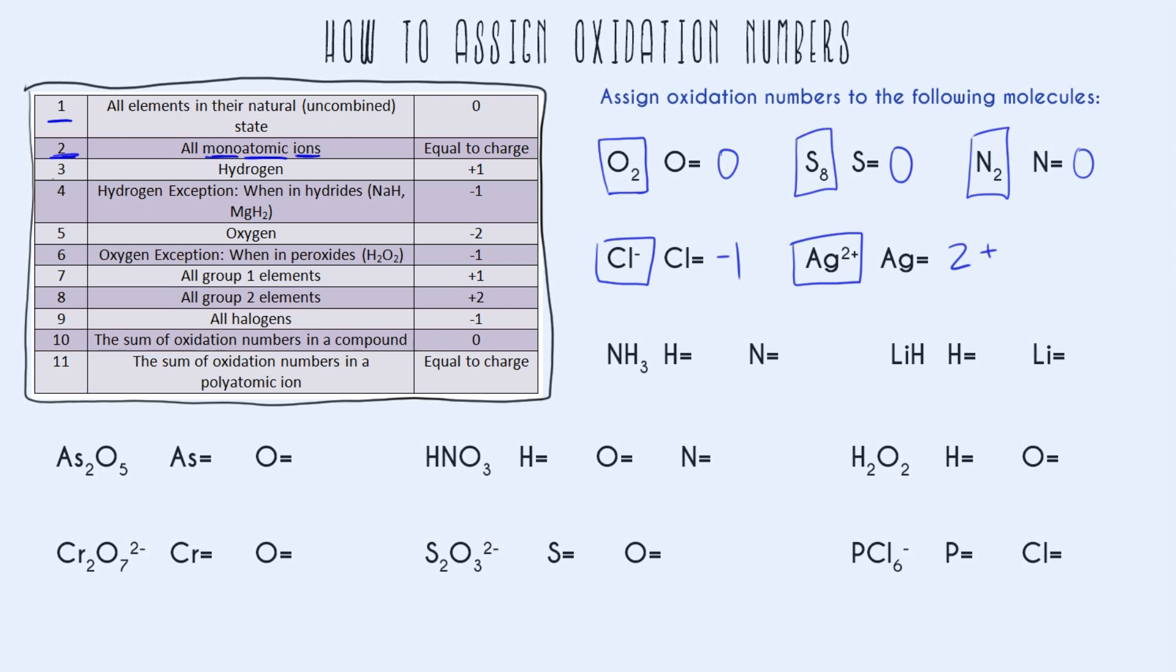Rule number three, talking about hydrogen. In almost every example, hydrogen has an oxidation number of plus one. So in this example, hydrogen is going to have an oxidation number of plus one. And now to get the oxidation number of nitrogen, we're going to go down to rule number 10, and we know that the sum of oxidation numbers in a compound adds up to zero. So basically, NH3 has no charge. Its overall charge is zero. So now we can set up a bit of a math problem.